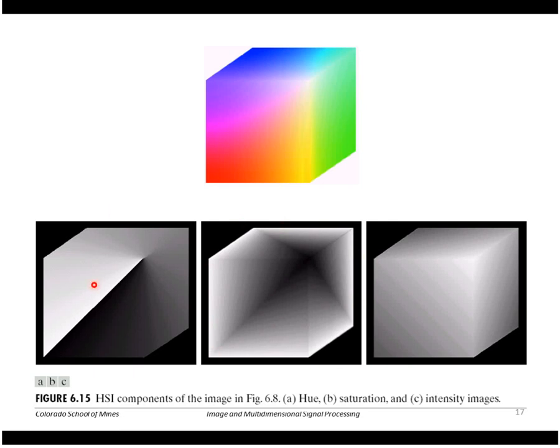The hue, remember we said, was the angle about the axis. You can see that it crosses the boundary between zero and 360 right here. So as we rotate about the axis, we go from 360 and we wrap back around to zero.